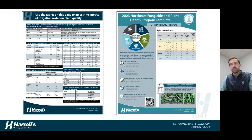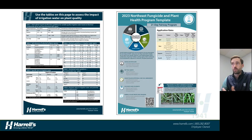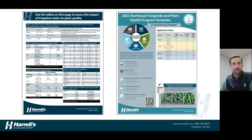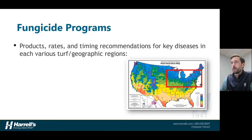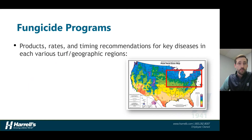It might say, compared to my water test, this tells me that I have high salinity water or high bicarbonate water — things that you might need to address to manage the water source that you do have. Second, we have an example of a fungicide program that we put together. These are very extensive fungicide programs. We have several available, and they describe products, rates, and timing of applications to address key diseases in each turf or geographic region that we serve.